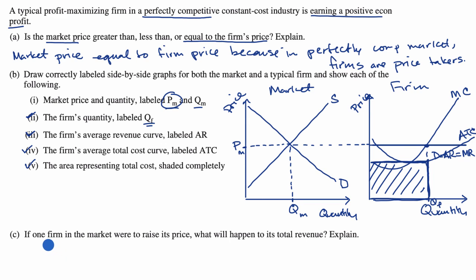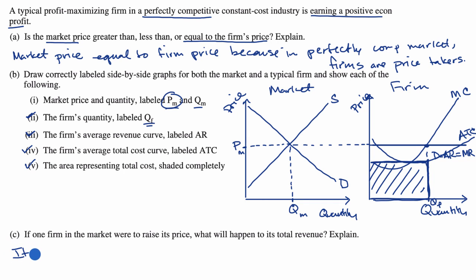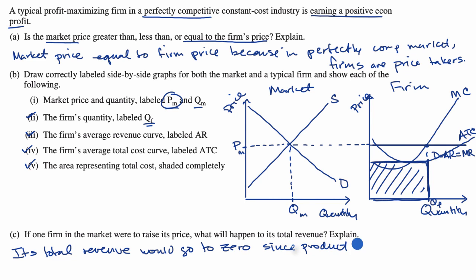Part C: if one firm in the market were to raise its price, what would happen to its total revenue? Remember, we're dealing with a perfectly competitive industry — there's no differentiation between anyone's product. So if someone were to raise their price, no one would buy their product anymore because consumers can get identical products from others at a lower price. Total revenue would go to zero, since the product is undifferentiated.